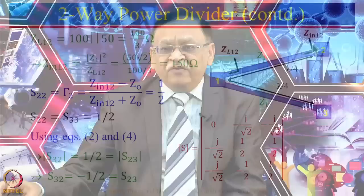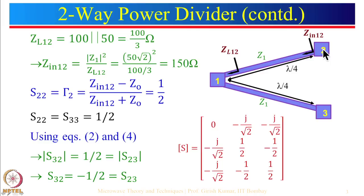Now let us see whether this can be used as a power combiner. We can give input here — half goes here and half goes there. But is this a good power combiner? If we give input at port 2, S22 = 1/2, meaning one quarter of the power reflects back. Also one quarter goes to port 3 and only half goes to port 1. So this is not a very good combiner — it is a good power divider but not a good power combiner.